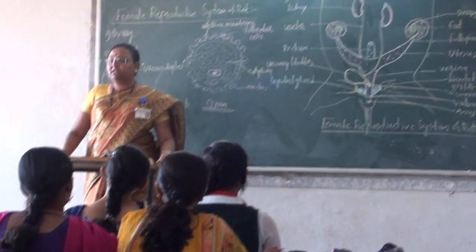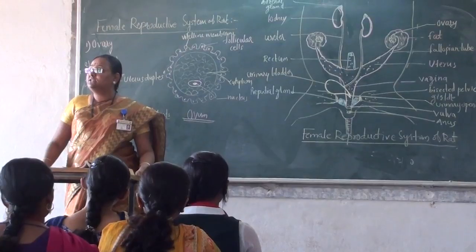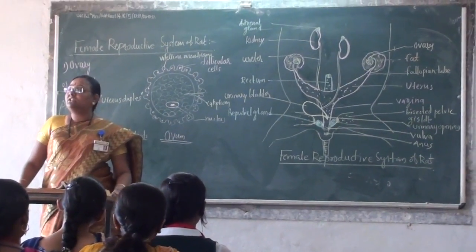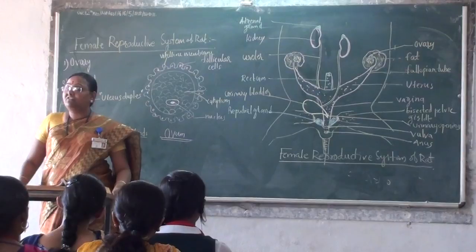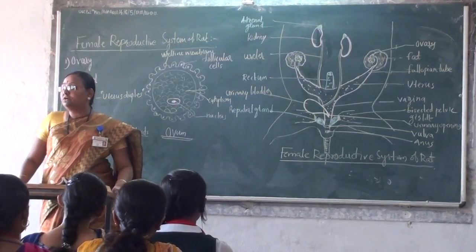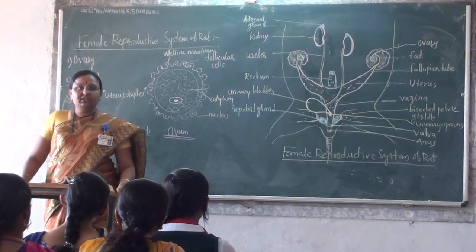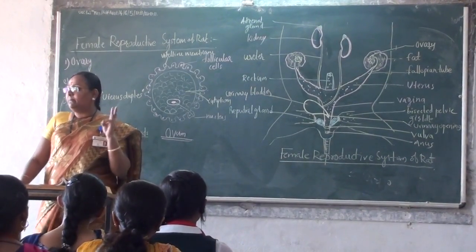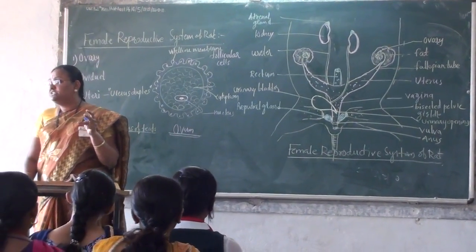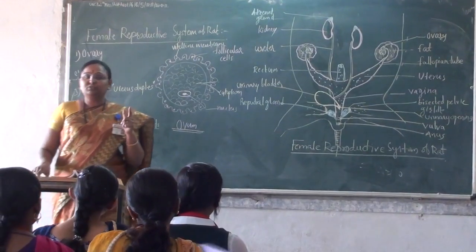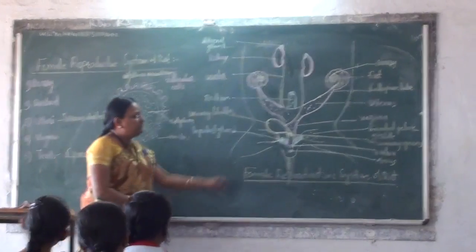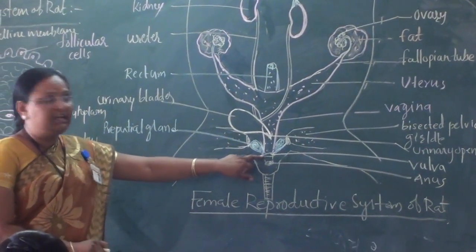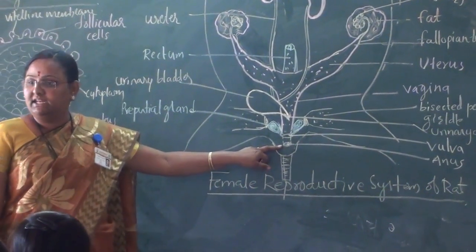The next topic is the sexual dimorphism of the rat. Two apertures are in the male and three apertures are in the female. The first aperture is the urinary, the second is the genital aperture, and the third is the anal aperture.